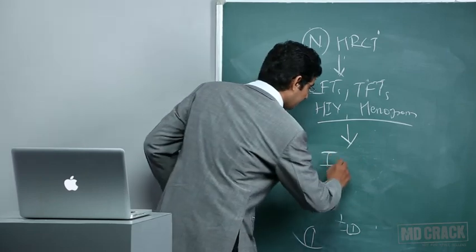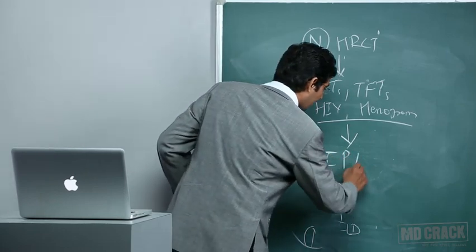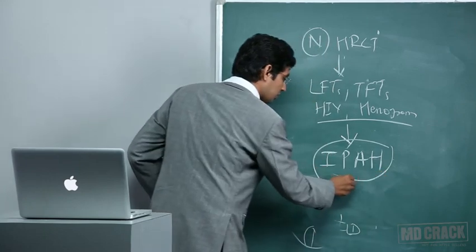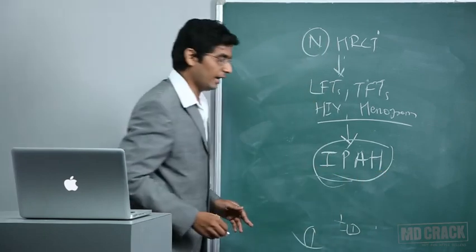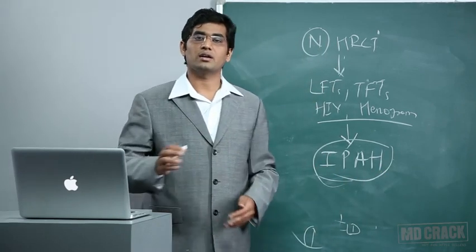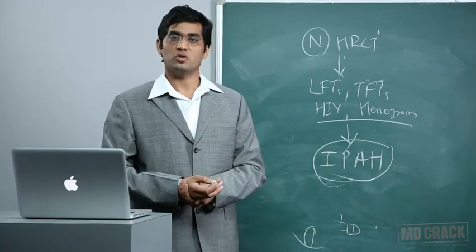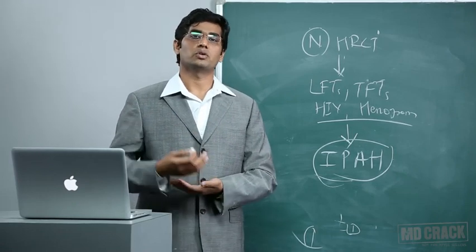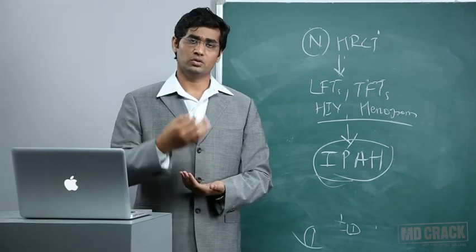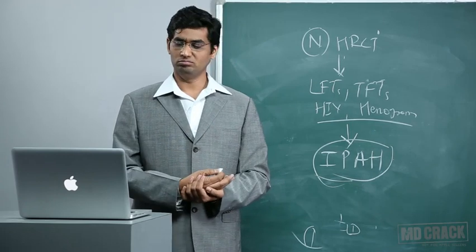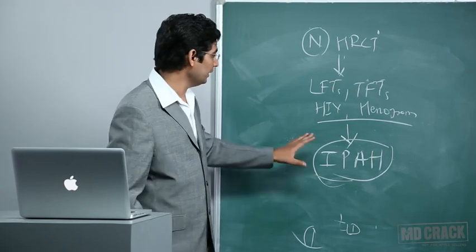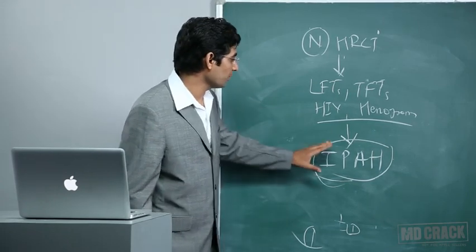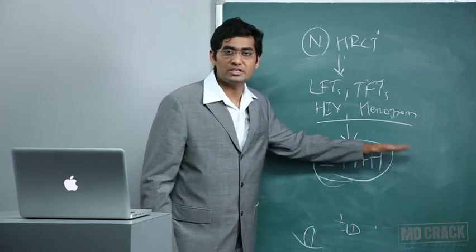Once IPAH is diagnosed, you should test for vasodilator response. You need to give nitric oxide, a prostaglandin, or adenosine. This leads to a confirmed diagnosis of idiopathic pulmonary arterial hypertension.